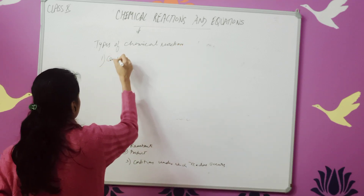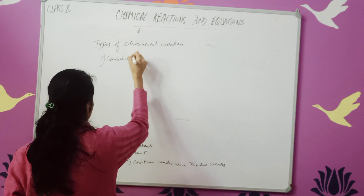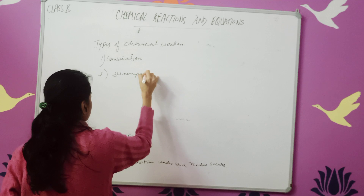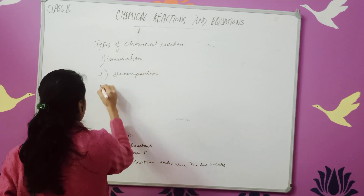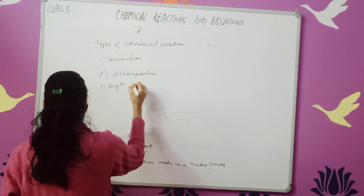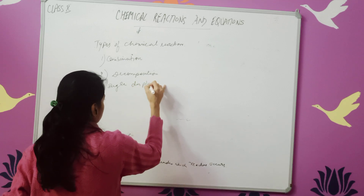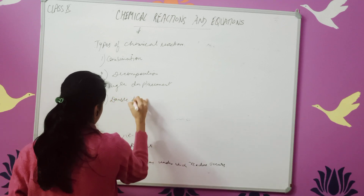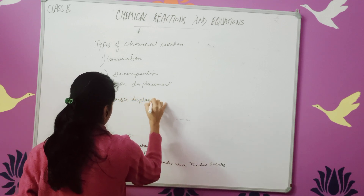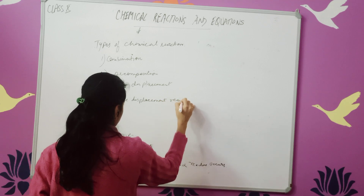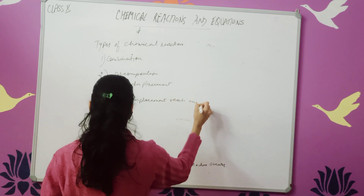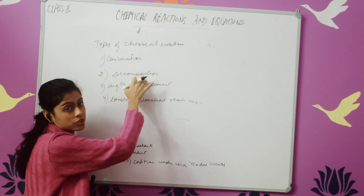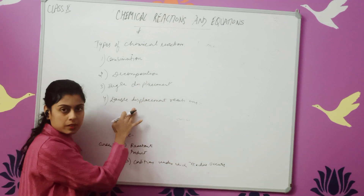Number 1 is combination reaction. Number 2 is decomposition reaction. Number 3 is single displacement reaction. Number 4 is double displacement reaction. So there are 4 types of chemical reactions: combination reaction, decomposition reaction, single displacement reaction, and double displacement reaction.